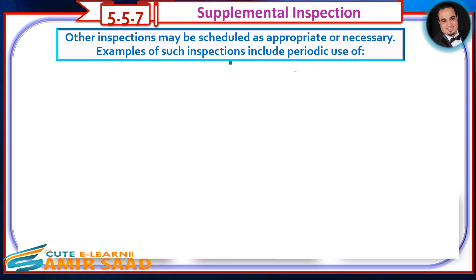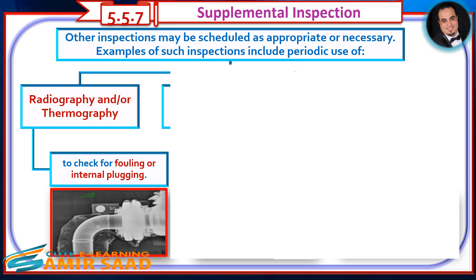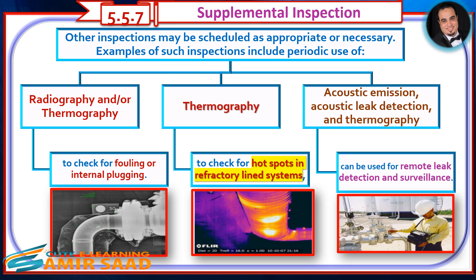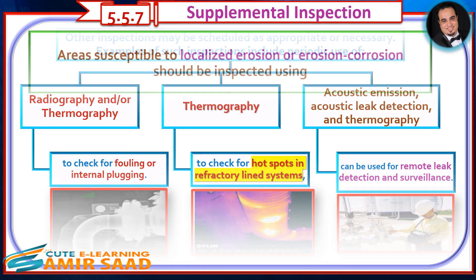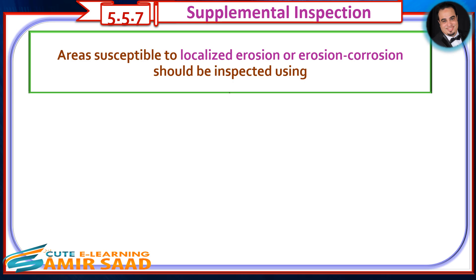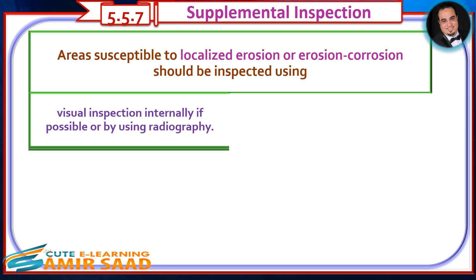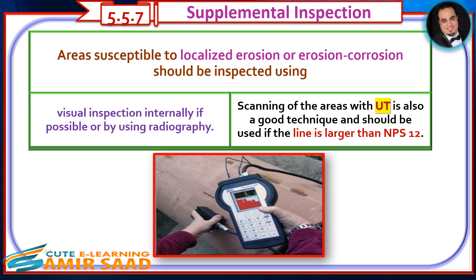Other supplemental inspections may be scheduled as appropriate or necessary. Examples include periodic use of radiography and/or thermography to check for fouling or internal plugging, thermography to check for hot spots in refractory-lined systems, and acoustic emission or acoustic leak detection for remote leak detection and surveillance. Areas susceptible to localized erosion or erosion-corrosion should be inspected using visual inspection internally if possible, or by radiography. Scanning with UT is also a good technique and should be used if the line is larger than NPS-12.